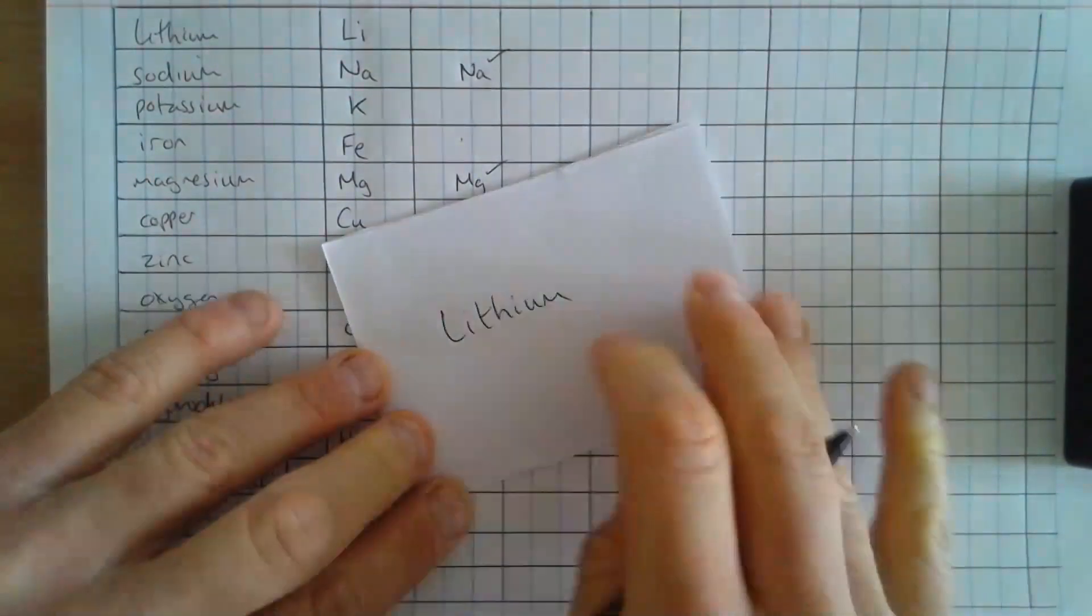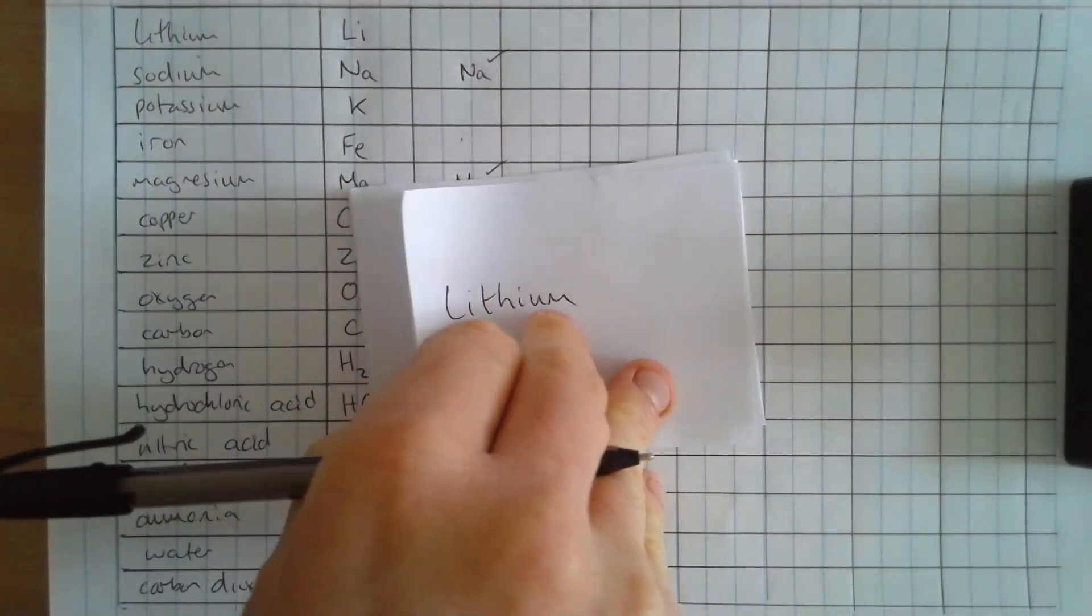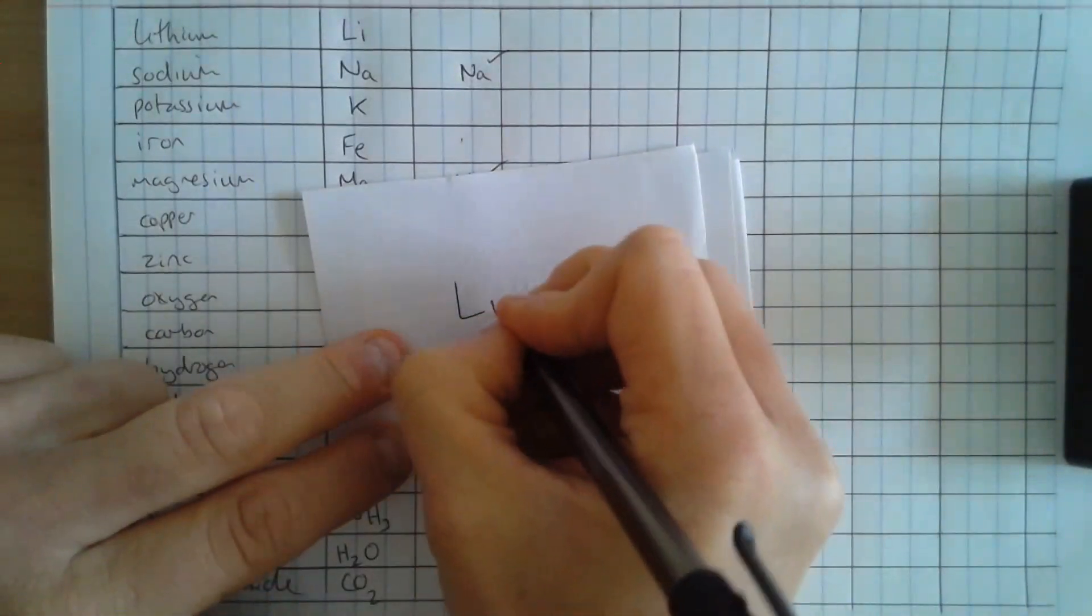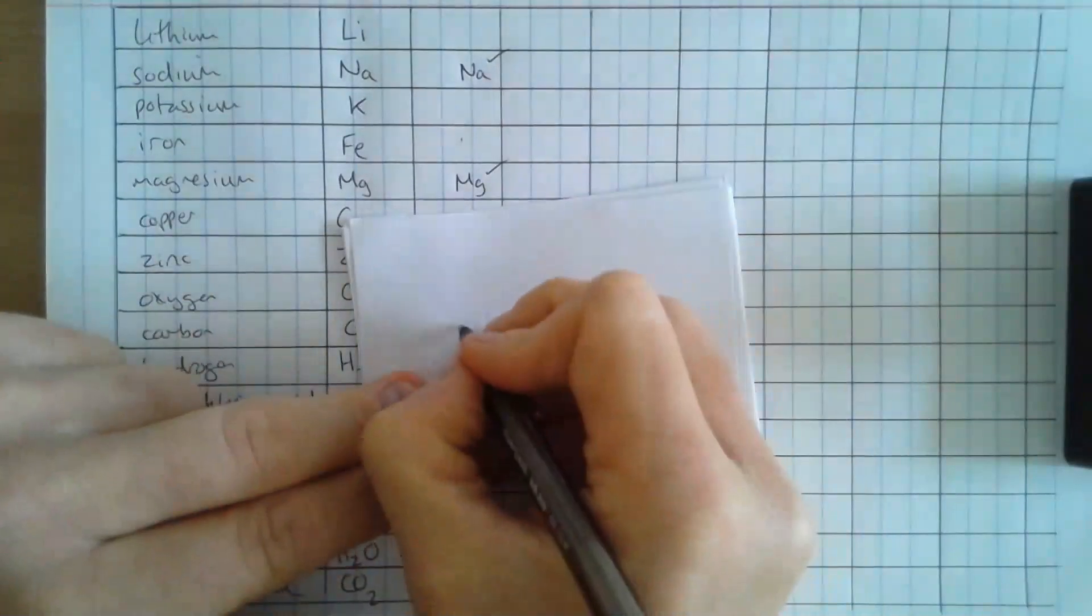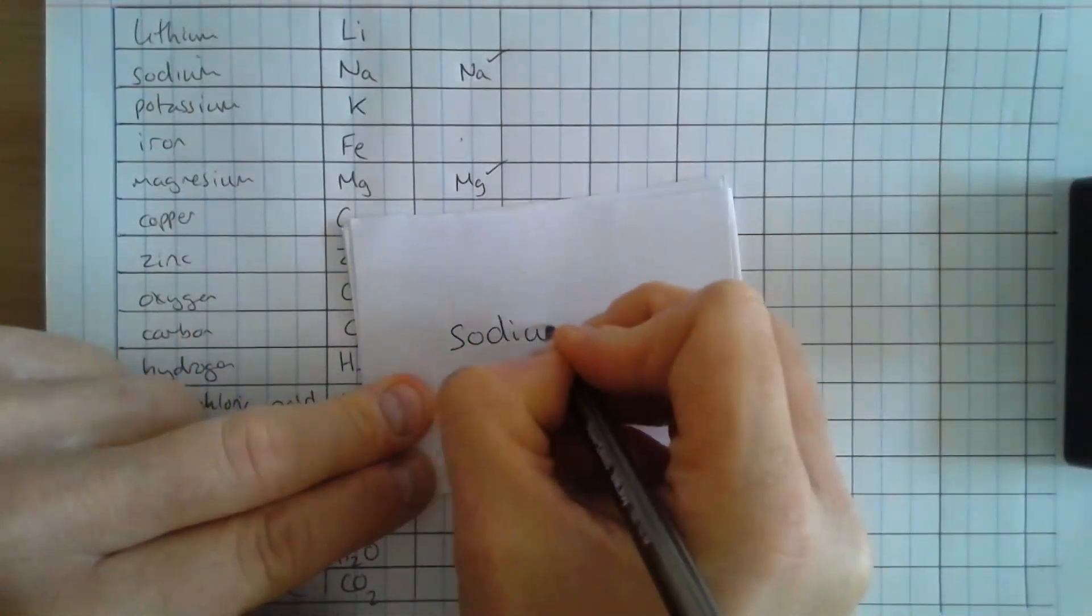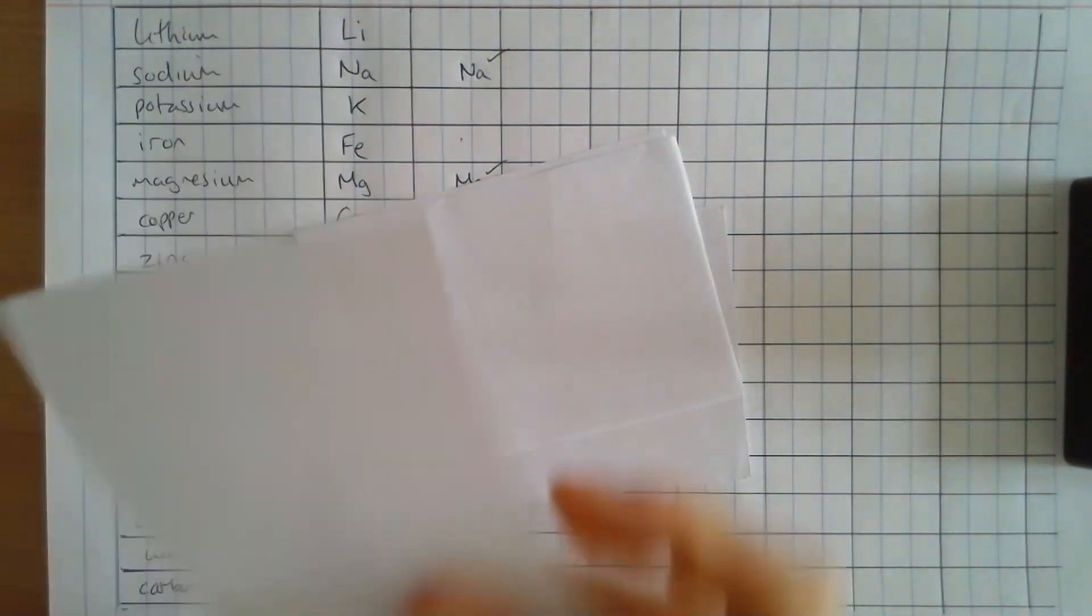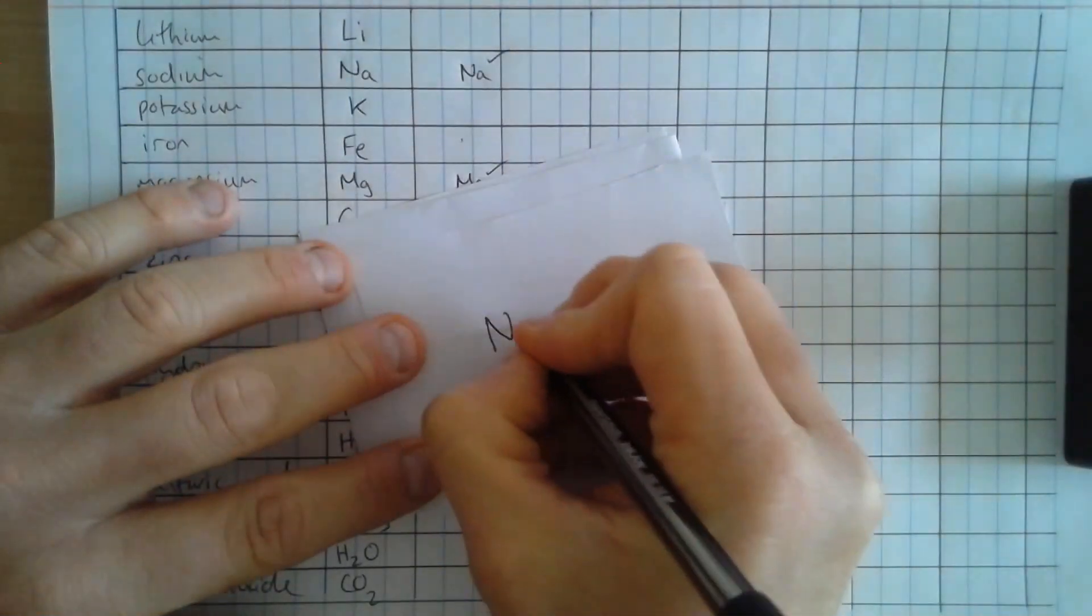So what I'm doing now is writing lithium on one side of the piece of paper and on the other, I'm going to write its symbol, Li. And then I won't do it for all of them, but I'll just do the first two as an example. And that's all you'd have to do for today's revision session.